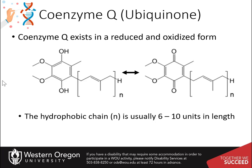Coenzyme Q, or ubiquinones, are found in the cells of all aerobic organisms, from the simplest bacteria to humans. They mediate important proton and electron transfer reactions in the mitochondria, chloroplasts, Golgi apparatus, endoplasmic reticulum, and the plasma membrane of oxidative bacteria. Thus, they are of key importance for producing energy during oxidative metabolism and photosynthesis. The electrons are ultimately used to reduce molecular oxygen to water, releasing the energy necessary to sustain the life of the cell.